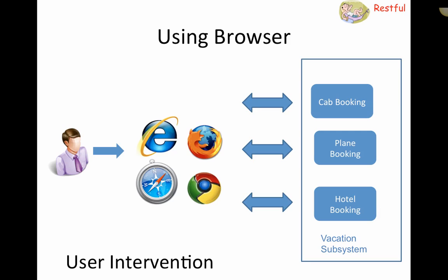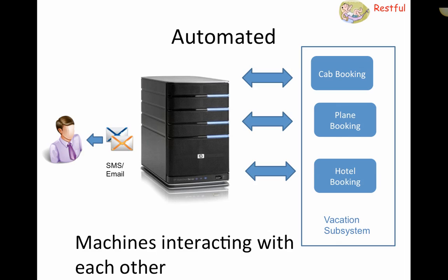Now let's say something changes in your itinerary — not because you changed it, but because something went wrong. Say the flight was delayed because Mumbai airport is closed due to rain. You'd have to go and look for an alternative hotel booking and alternative cab booking. Ideally, what you'd want is a 'mother of all travel desks' that does things for you — you give it your itinerary, it constantly monitors for changes, and SMS/emails you options, or even automatically changes your cab, hotel, and plane bookings.